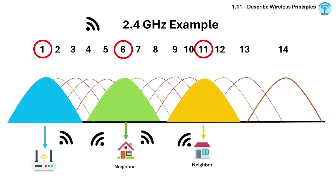The best solution is to use channel 1 for your router, have one neighbor use channel 6, and the other use channel 11 — all spaced out with no overlap.